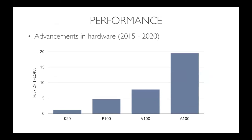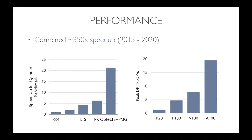In parallel, there have been advancements in hardware. When this work began around 2015-2017, K20 GPUs offered around one teraflop. The upcoming Ampere NVIDIA GPUs should get closer to 20 teraflops — around a 16x speedup in hardware. Combining the algorithmic advancements and hardware advancements over the last five years gives speedup factors in the neighborhood of 300 to 400, which will be tested once the Ampere GPUs are available.